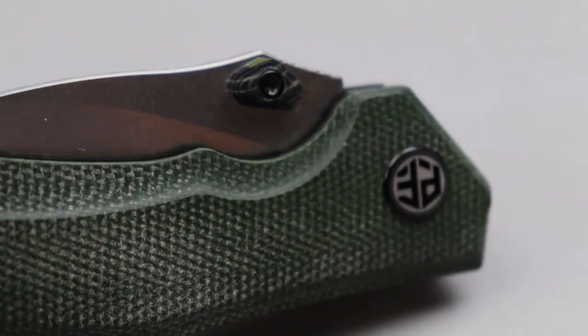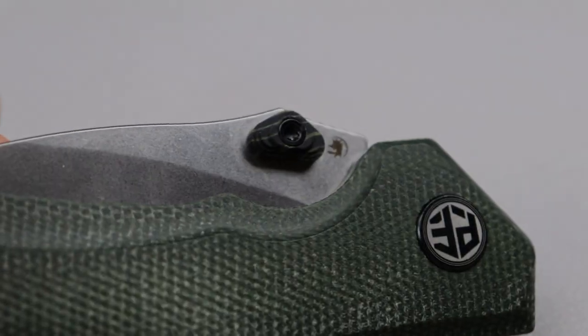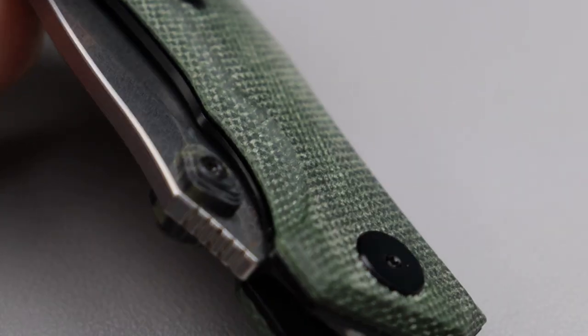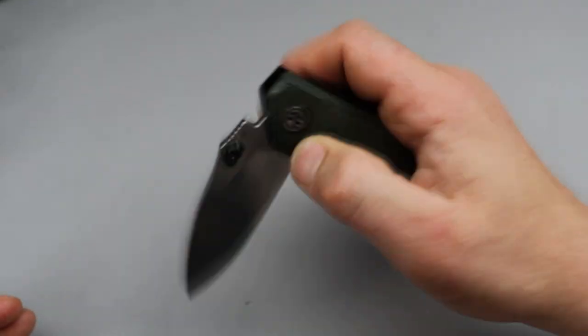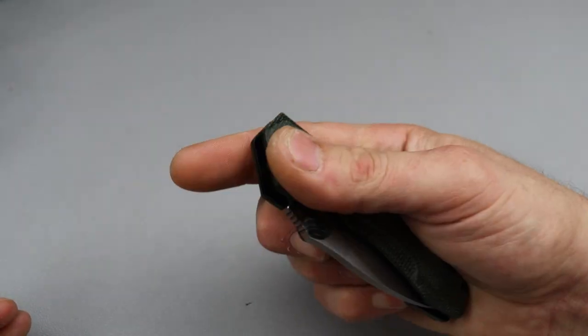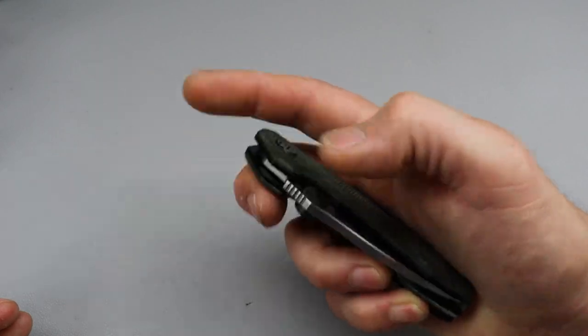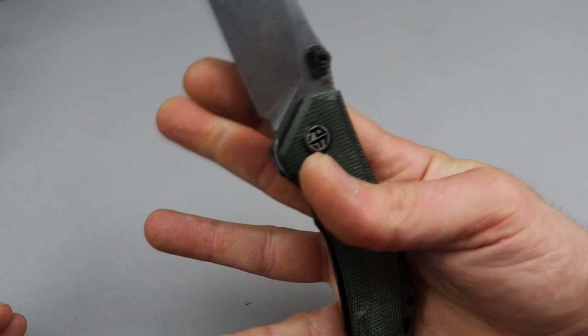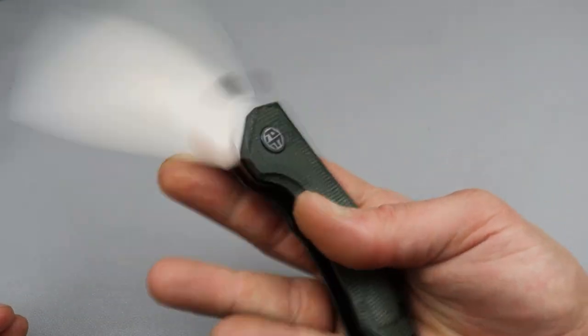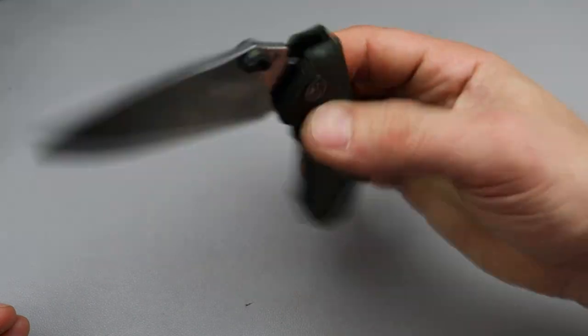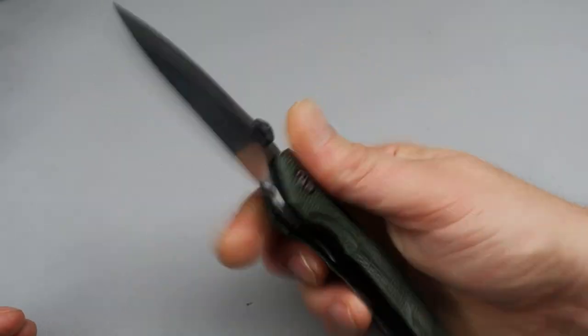Then you couple these thumb studs, which you look at them and you're like, they look weird kind of, but then you use them and you realize it is one of the most functional and comfortable thumb stud deployments that you can ever find. You can go from the bottom, you can go from the side, you can reverse flick from the front, you can reverse flick from the bottom. It's just so fidgety friendly and comfortable.